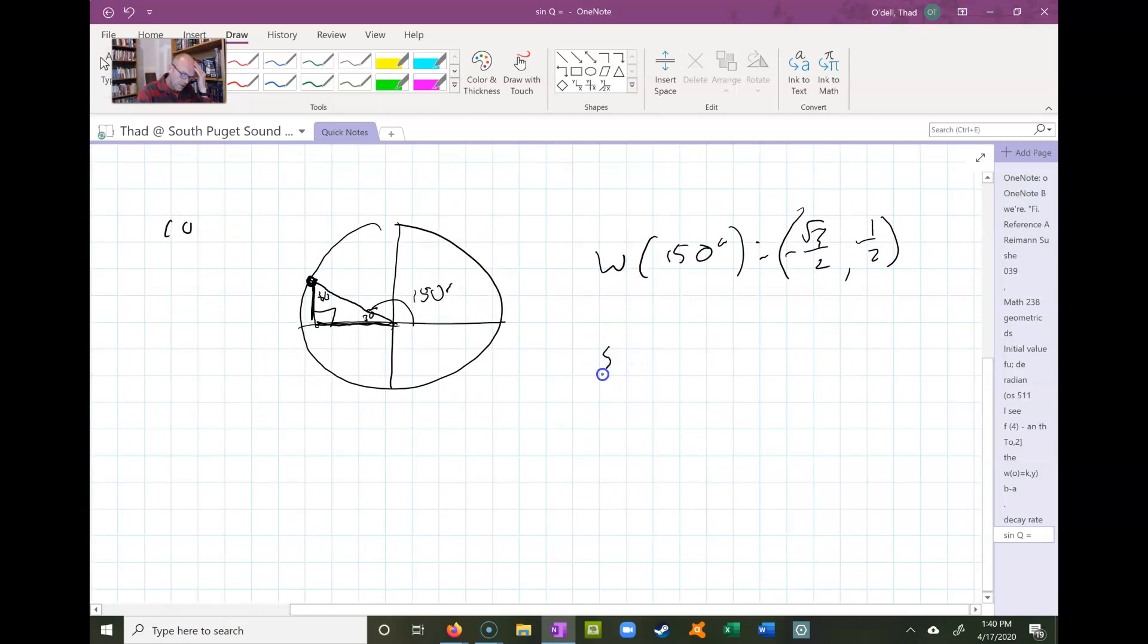But then if we take the sine of 150, that is opposite over hypotenuse. But since the hypotenuse is one because we're talking about the unit circle, that means that sine of 150 in this case would just be the opposite, so that would just be one half.